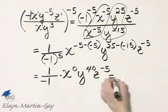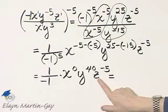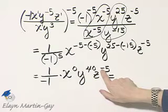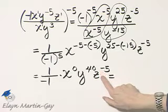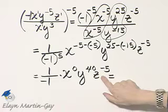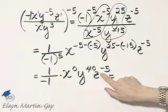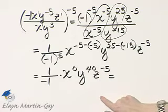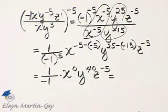And now let's write down our solution. Remember, we want to write this with positive exponents only. So I'll write this z to the negative 5 that's currently in the numerator. I'll write that in the denominator as a z to the fifth power.